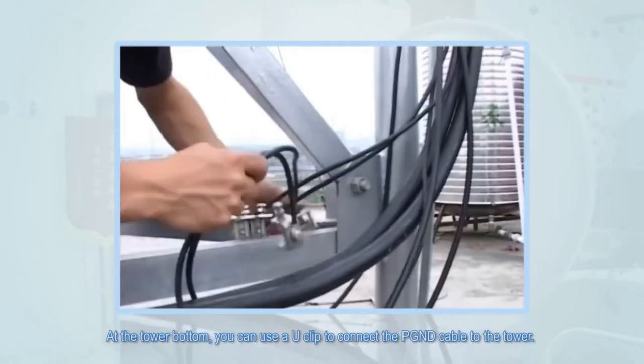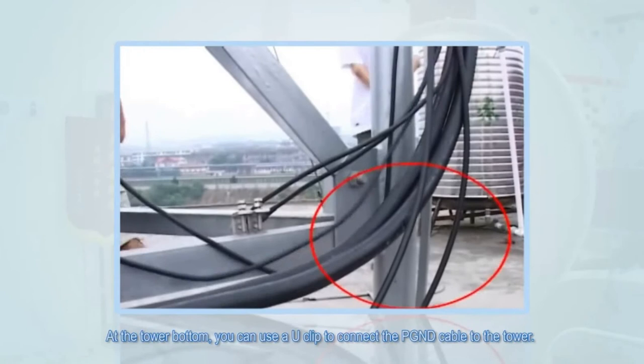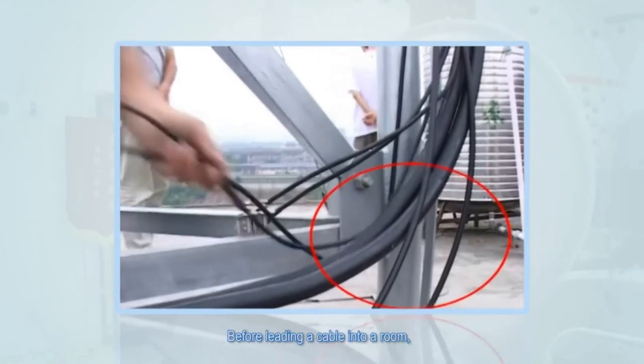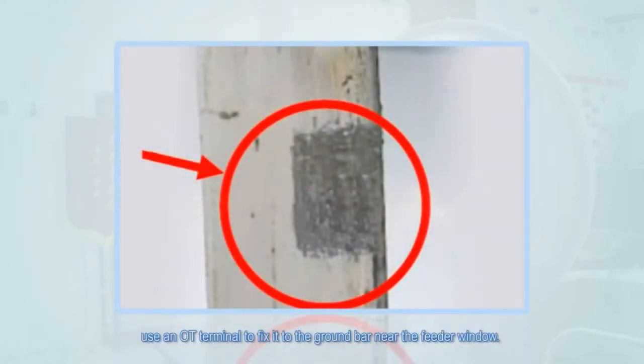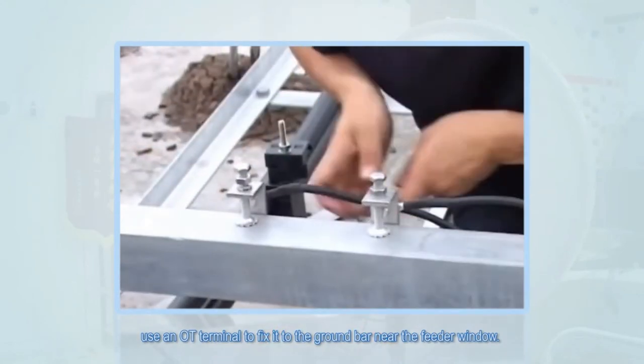At the tower bottom, you can use a U-clip to connect the PGND cable to the tower. Before leading a cable into a room, use an OT terminal to fix it to the ground bar near the feeder window.